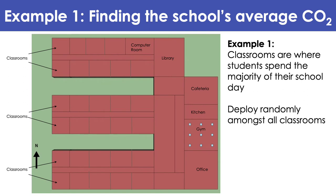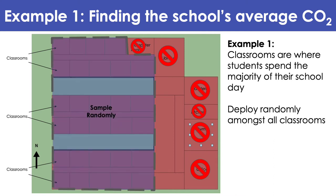Here we'll show an example of how to find a school's average CO2 level based on this PNNL prototype of a primary school. If students spend the majority of their time in classrooms and you only want to look at classroom spaces, you can leave out the computer lab, library, cafeteria, etc. You can then deploy however many monitors you have randomly amongst all the classrooms. Here's what a potential random sampling among classrooms would look like.